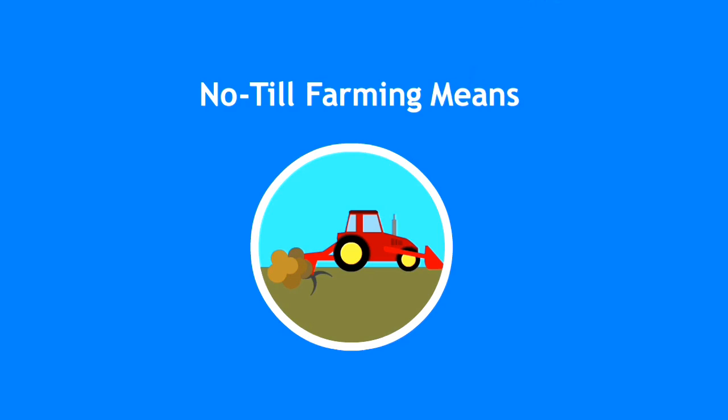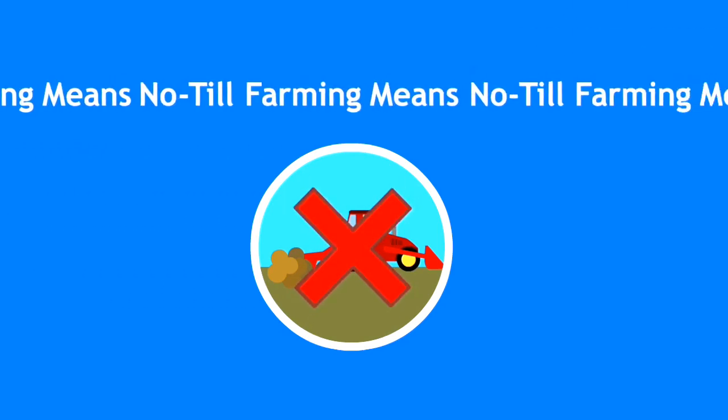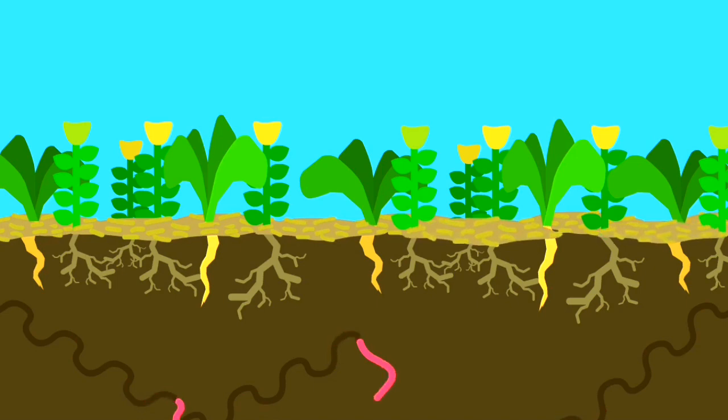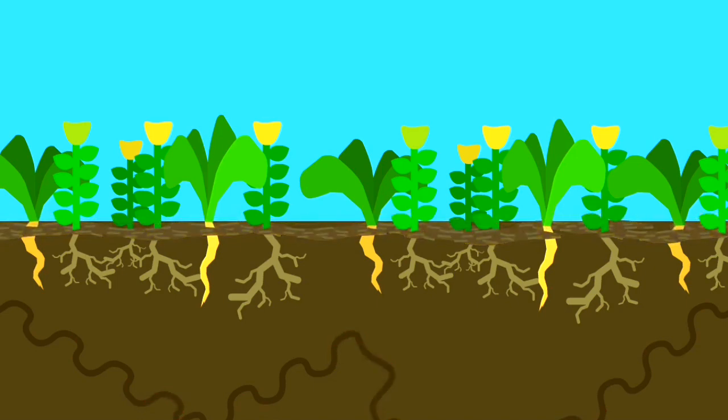Central to no-till farming is to not do that. Instead of tilling, plant cover crops whose roots break up the soil. Let the worms aerate the soil and bring down nutrients. Keep the soil covered with an organic mulch, which will break down over time, adding more organic matter to the soil.